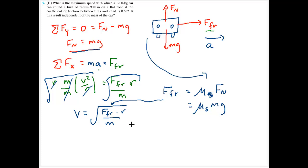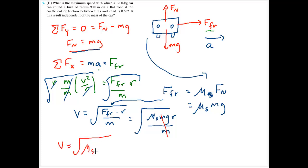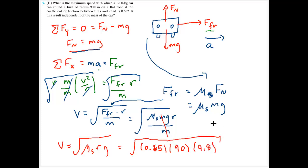The velocity of the car depends on the coefficient of static friction multiplied by the radius multiplied by gravity. Plugging in 0.65 for mu sub s, 90 meters for the radius, and 9.8 meters per second squared for gravity, our velocity is 23.94 meters per second. The result is independent of the mass of the car.